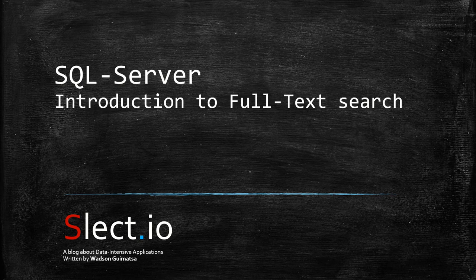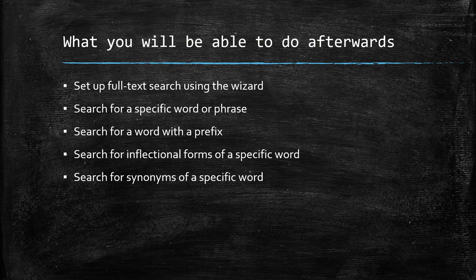Full text search is a feature that users and applications can use to run queries against natural language or character-based data in SQL Server tables. By the end of this video, you will know how to install and set up full text search on a given table. You will learn how to search for different forms of a word — plural or singular, verb conjugations, words starting with a specific text, or even synonyms of a word.